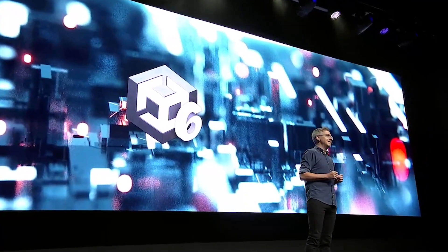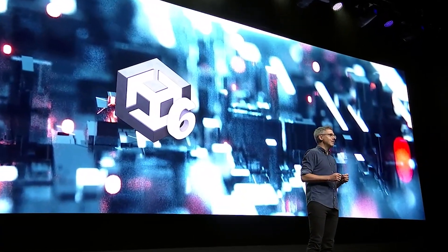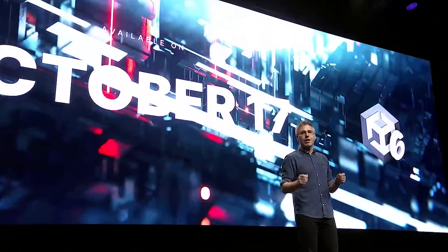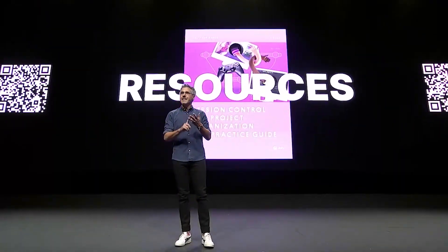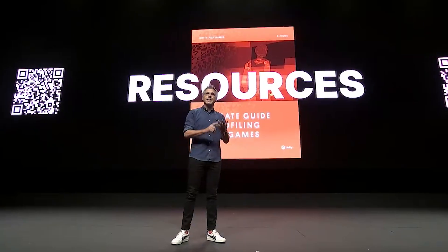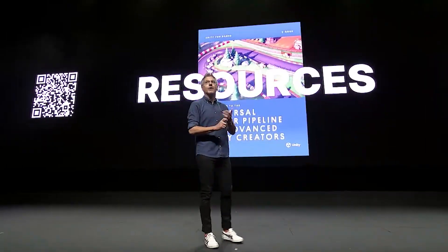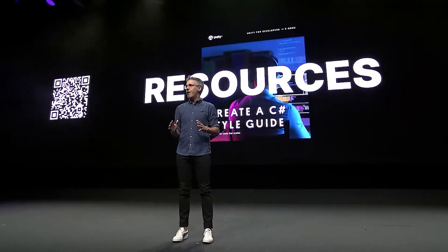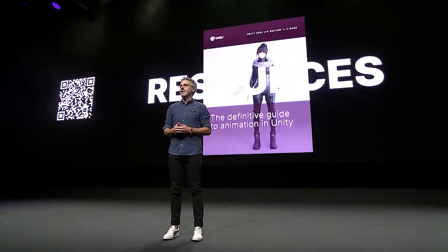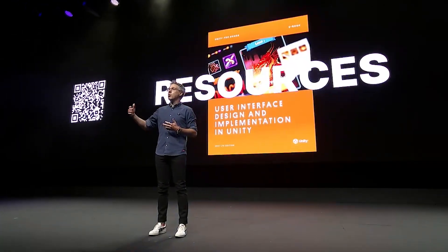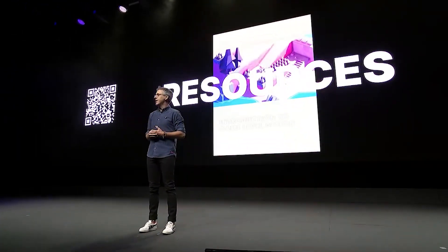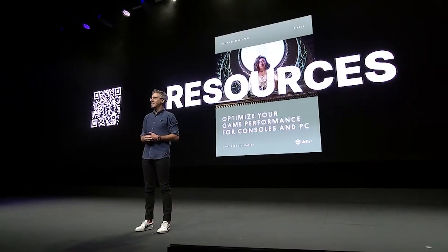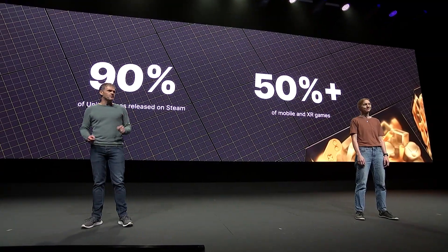Key takeaways: Unity 6 will officially launch on October the 17th, 2024, and this will come with updated guides and long-term support which goes much further than the normal support cycles — over a two-year period — so they can be developing the next version of the engine alongside it, so you're always up to date with the things that you need.